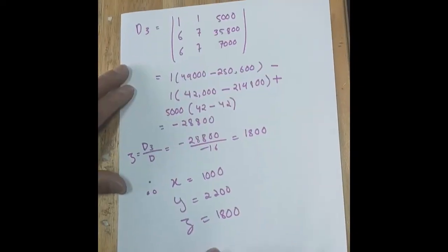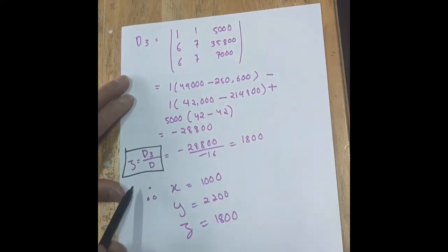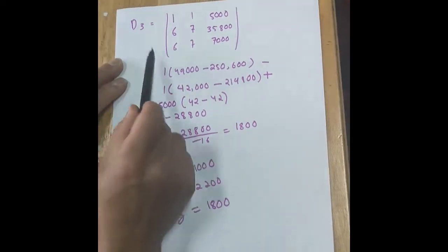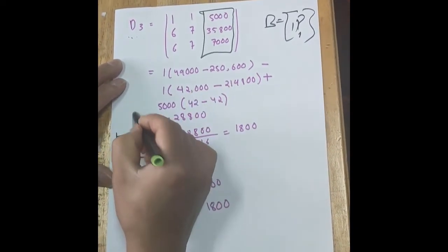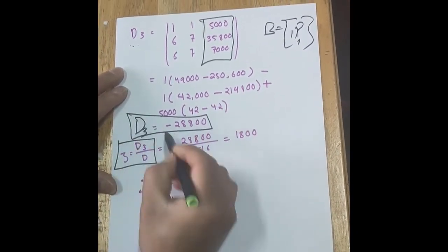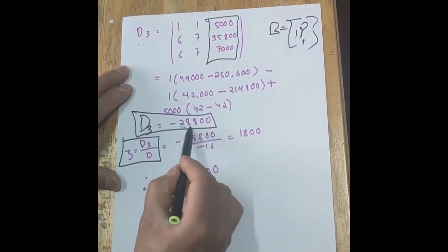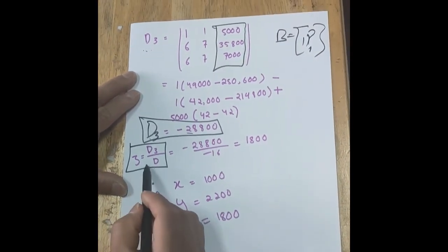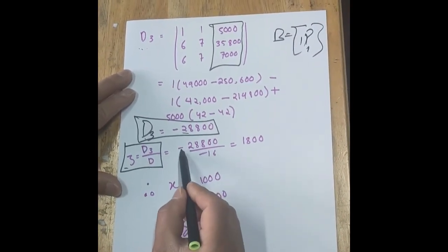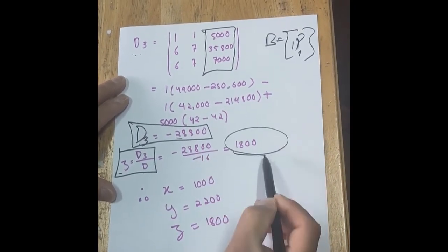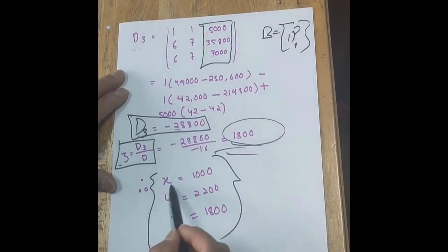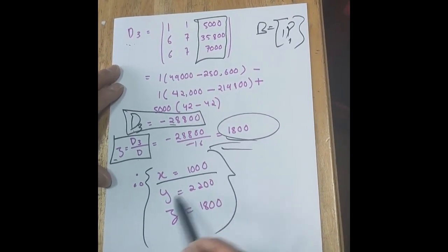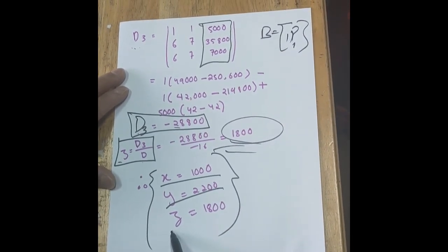To find z, compute D3 by replacing the third column of the coefficient matrix A with constant matrix B, then find its determinant. D3 = −28,800. Therefore z = D3/D = −28,800/−16 = 1800. The final solution to this system of linear equations is: x = 1000, y = 2200, and z = 1800.